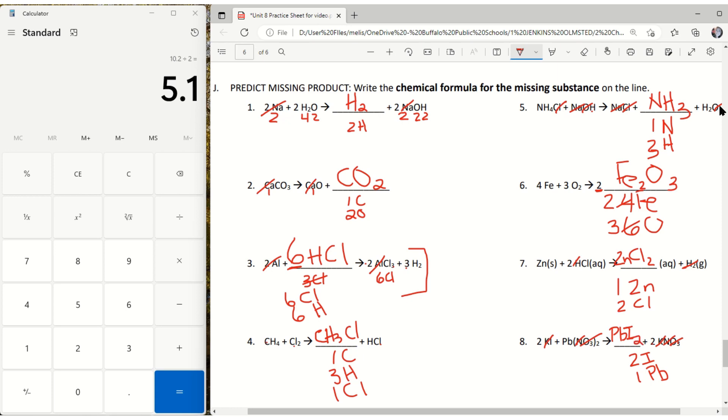So the important thing is figure out exactly what you have, which atoms are missing, and then you need to write the formula for it. And that is how you determine the missing substance. Paying attention to any coefficients. Sometimes you might have to determine the coefficient for yourself. Usually it's going to be written for you. And there you go.